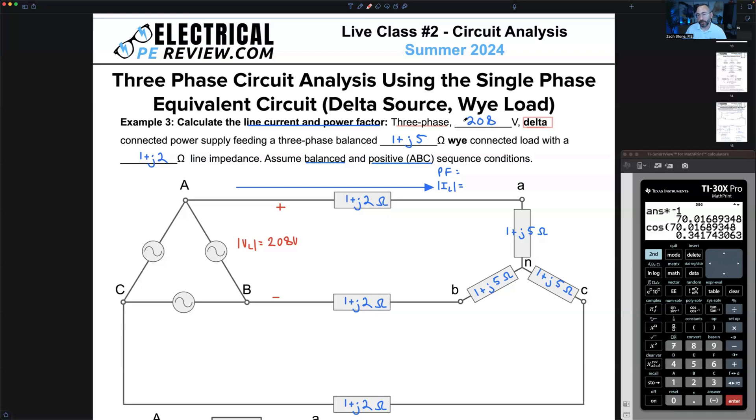208 volts, is that the line voltage of the system or the phase voltage? It's both. Why is it both? It's delta. Remember we showed the delta square root of three relationships, KVL, KCL relationships last night. I can call this V line or V phase. Here's my line voltage of my system, here's my delta phase voltage from A to B. They're the same.